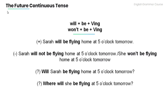To form the future continuous tense, use will plus be plus verb-ing. The negative: won't plus be plus verb-ing. Have a look at the examples below.